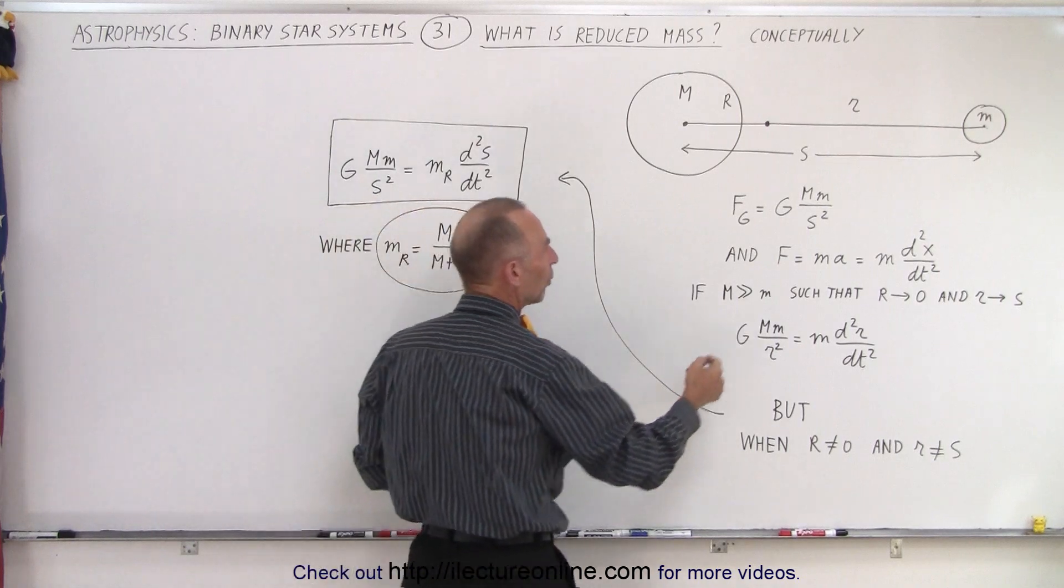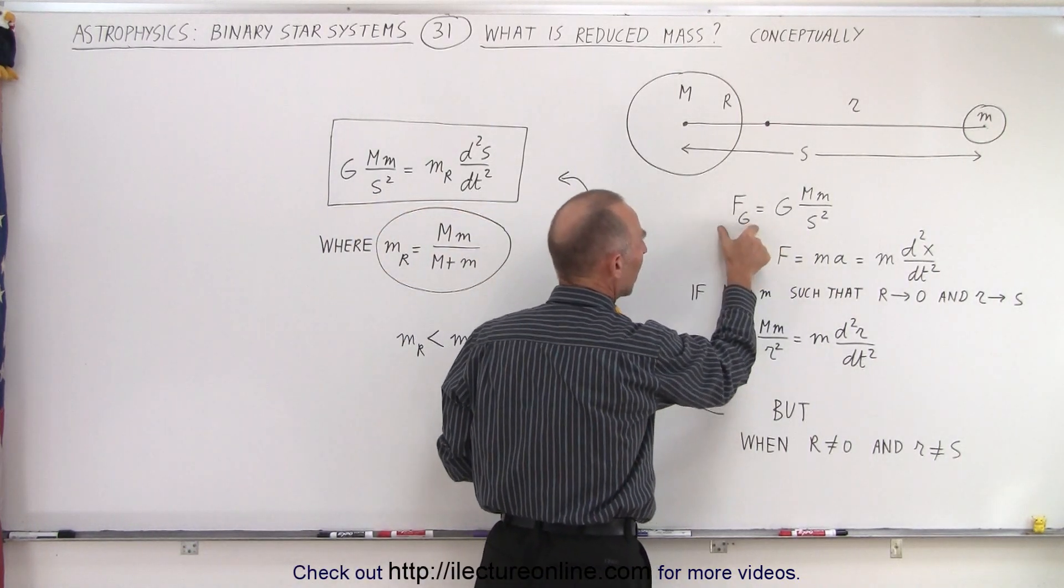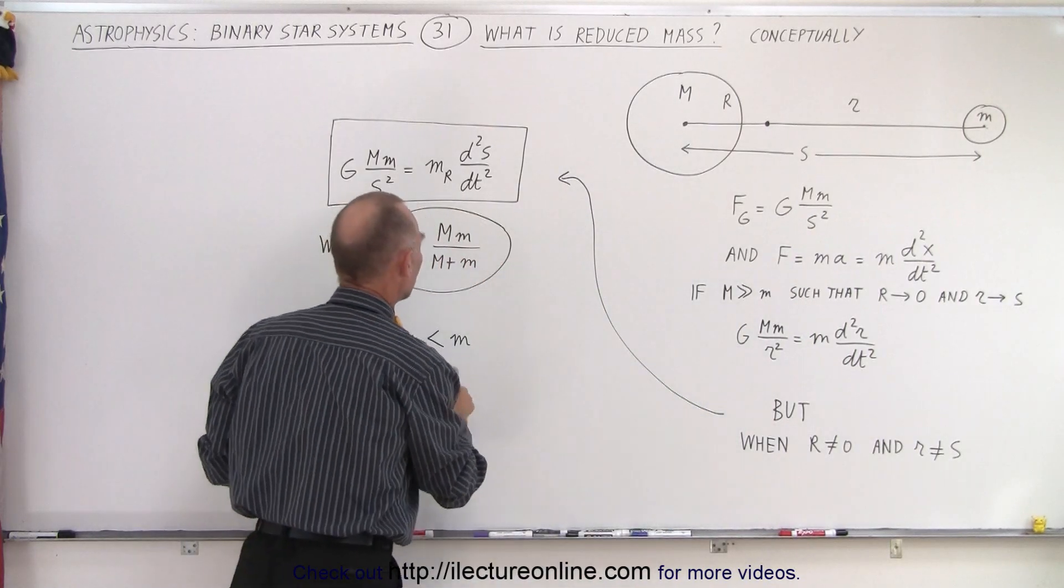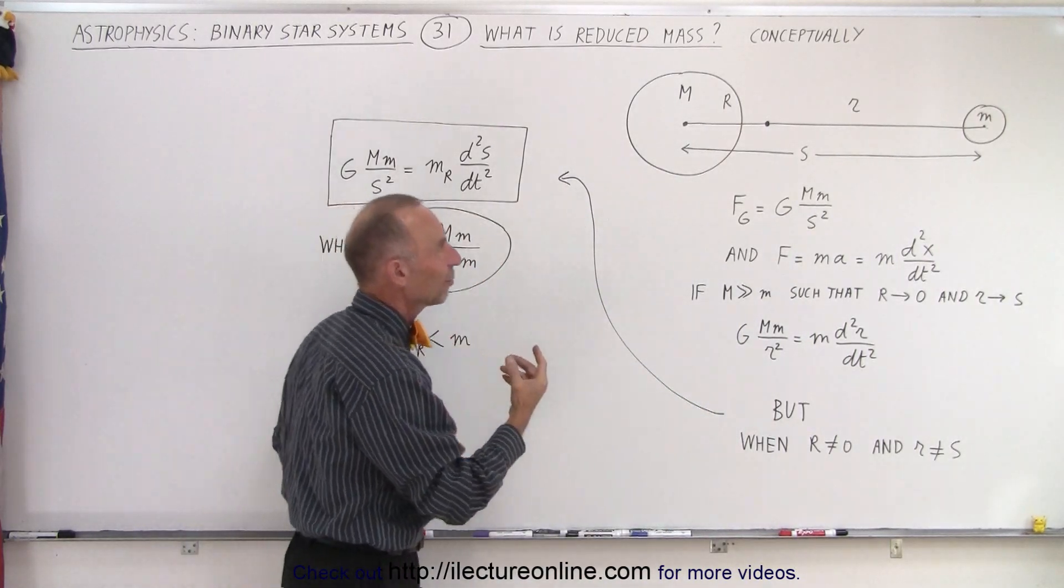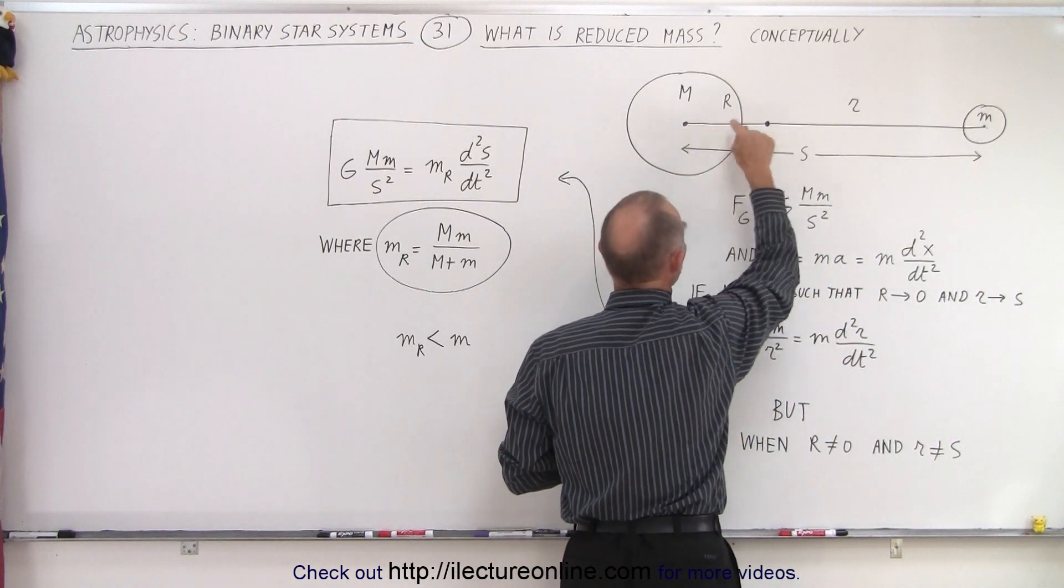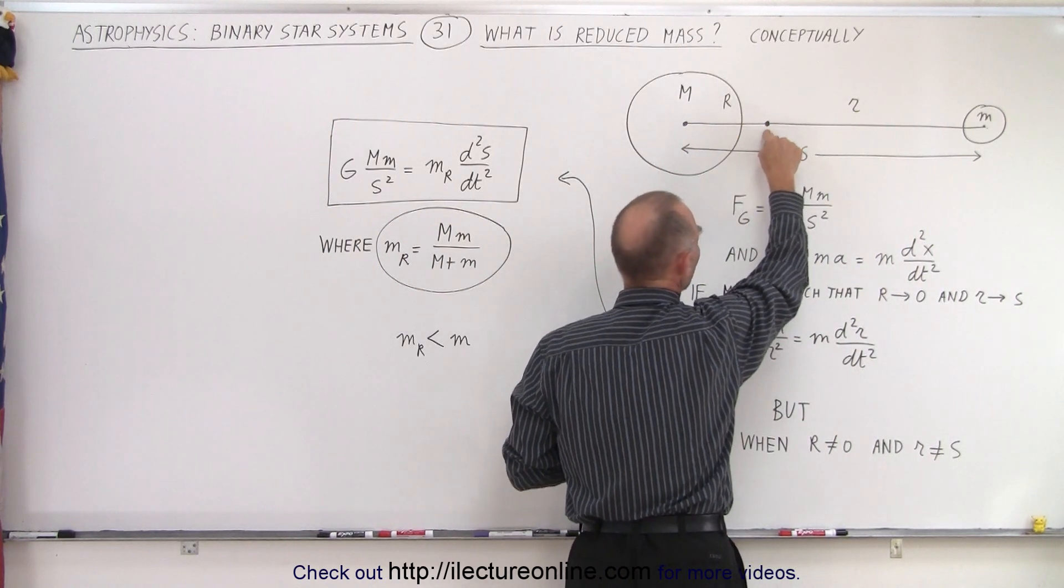So in order to use this equation, where F equals ma, the force of gravity equals the mass times acceleration of the small object, to use that equation correctly, since the small object does not revolve around the center mass of the large object, but the center mass of the system, the barycenter,